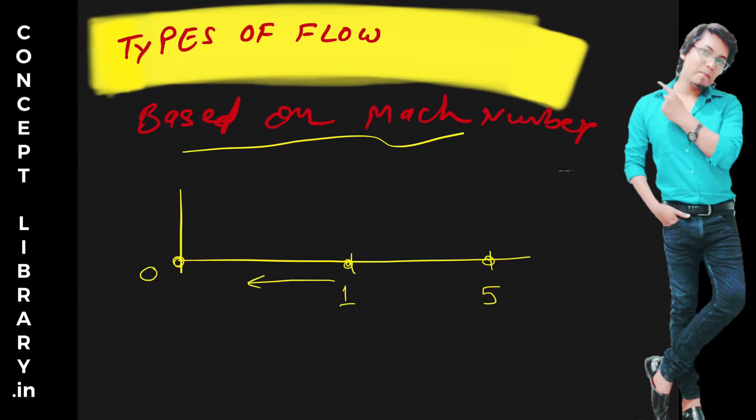Now if you are having Mach number between 1 and 5, that is known as supersonic. Now if you have Mach number greater than 5, then that is known as hypersonic.